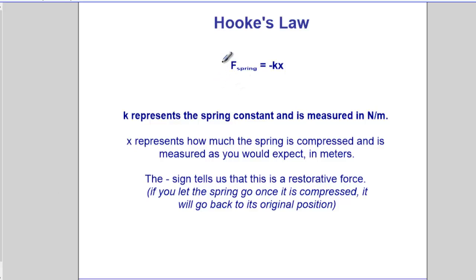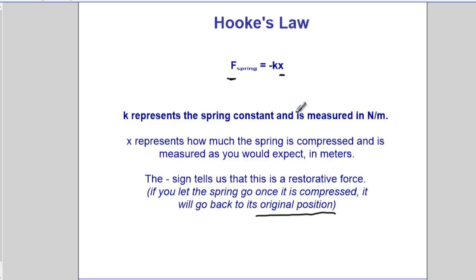Hooke's Law in equation form is totally intuitive: the farther you stretch a spring, x — which represents stretch or compression — the more force is required. That force depends on the amount of stretch, x, and also on something called k, a proportionality constant representing how stiff the spring is. The negative sign tells us that the spring will always pull back to its original position.